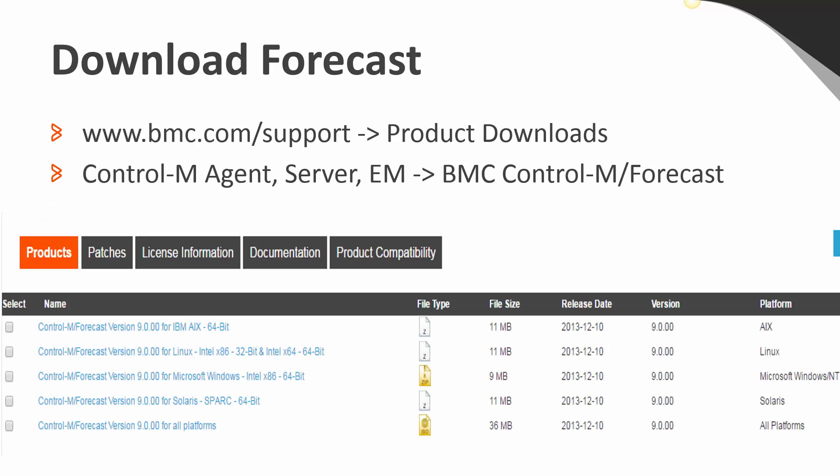To download Forecast, first you need to go to bmc.com support and then into the product download section. After you log in, you'll want to select Control-M Agent Server EM, then pull up that list and from that list find 'Forecast Control and Forecasting'. Here's an example download list from version 9. Specifically, you'll select the file for the operating system where your EM server is running, download that file, and then move it to the EM server.